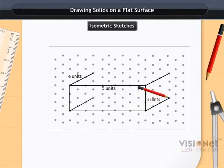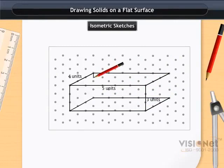Now, the back face is drawn by connecting the 4 matching corners. Thus, the isometric sketch of the cuboid is obtained.